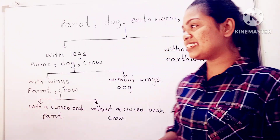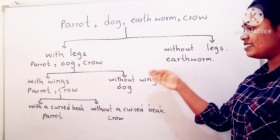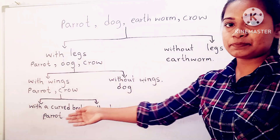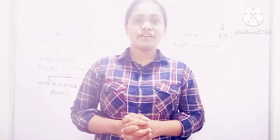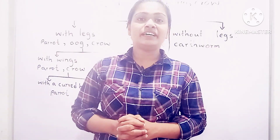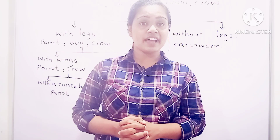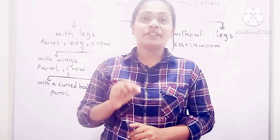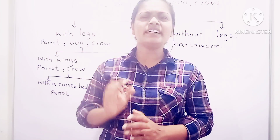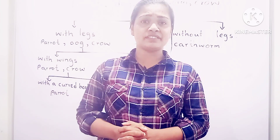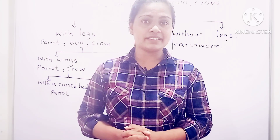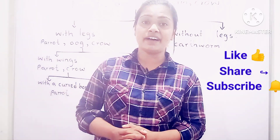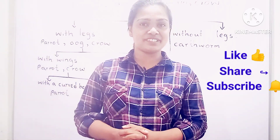Now we have categorized the given four animals according to their specific characteristics. The only thing we have to remember when drawing a dichotomous key is that we use only the external features of the given animals.